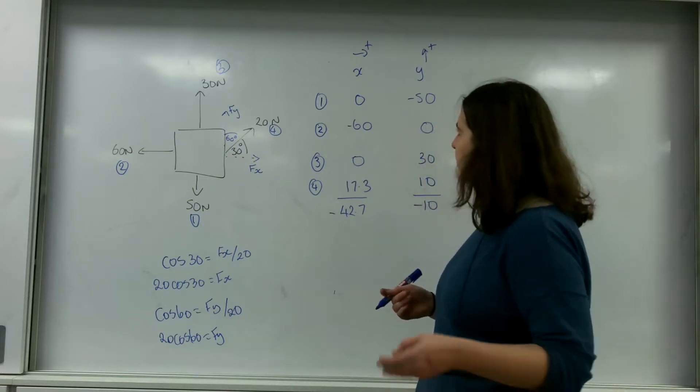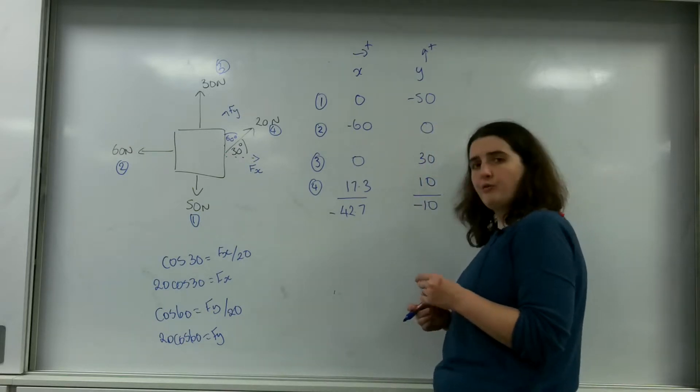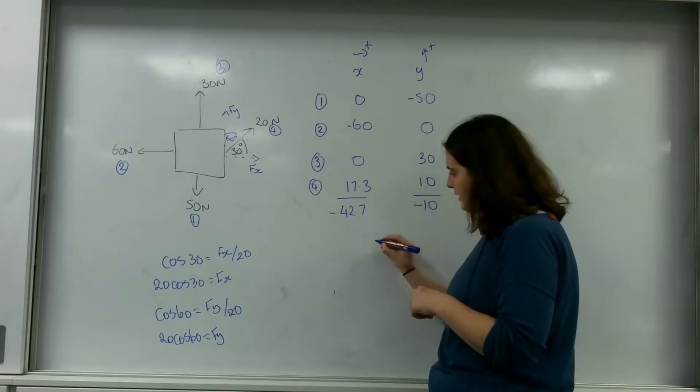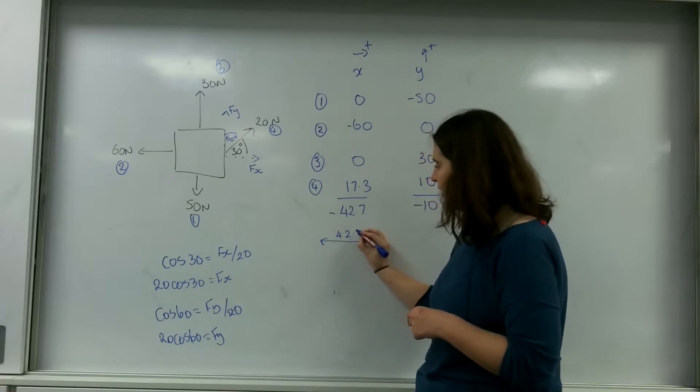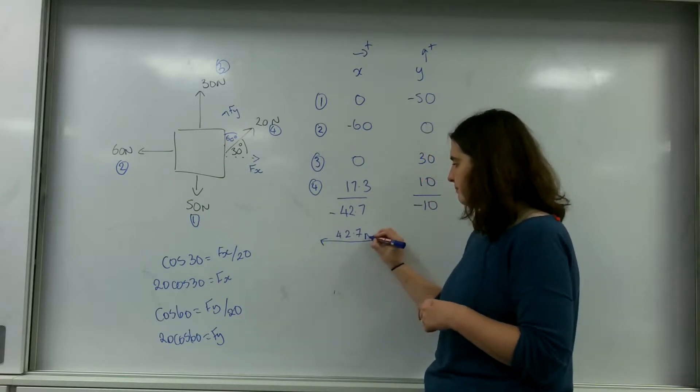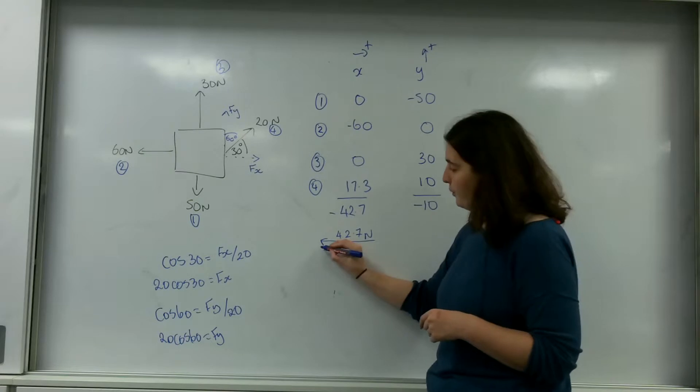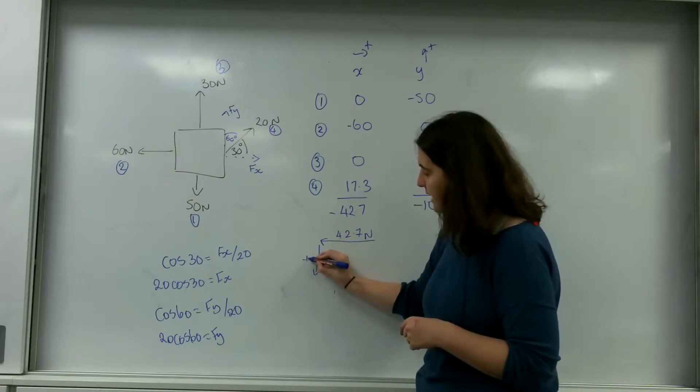So what this means is that my overall resultant in the x is working 42.7 that way and also working minus 10 down.